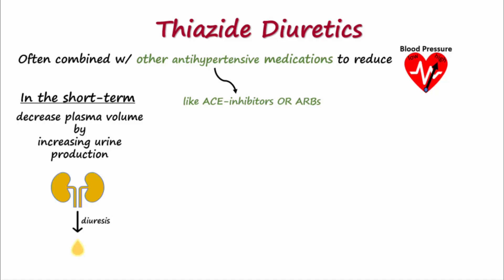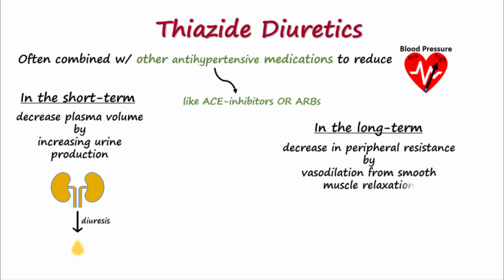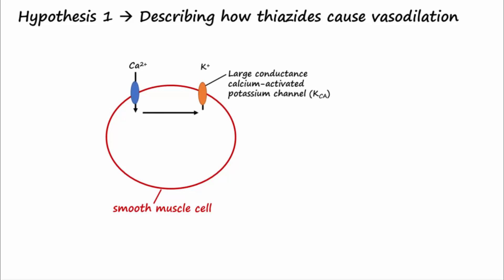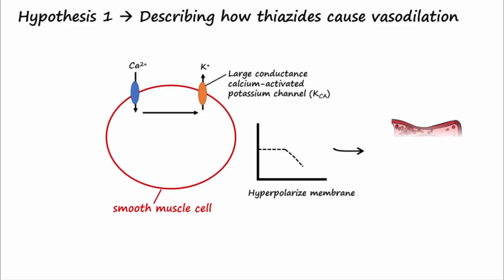In the long term, peripheral resistance falls due to thiazides causing relaxation of smooth muscle cells, bringing about vasodilation. Hydrochlorothiazide has been shown to activate large conductance calcium-activated potassium channels in smooth muscle cell membranes of the vasculature to cause hyperpolarization. This causes smooth muscle relaxation, which causes vasodilation, reducing peripheral resistance and blood pressure.